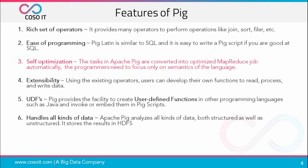Self-optimization: tasks in Apache Pig are converted into MapReduce jobs automatically, so programmers need to focus only on the semantics of the language and not on MapReduce. Extensibility: you can use existing operators and develop your own functions to read, process, and write data. Pig provides a facility to create user-defined functions, or UDFs, in other programming languages like Java, and then invoke or embed them in your Pig scripts.